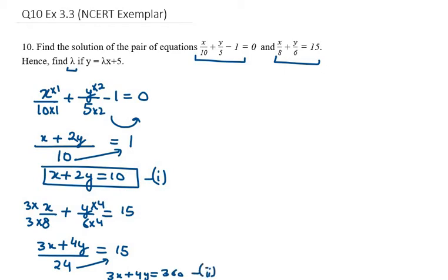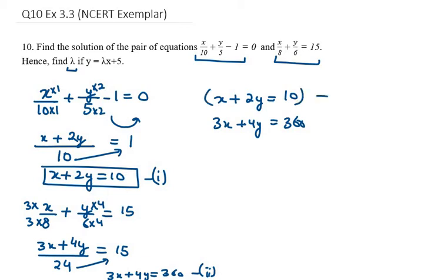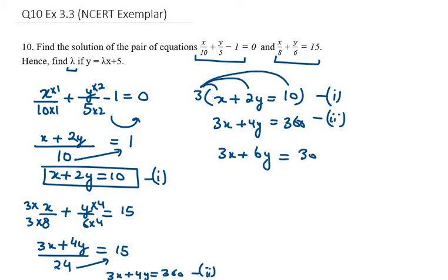We will solve using the elimination method. We have x plus 2y equals 10 and 3x plus 4y equals 360. To make the x coefficient equal, I will multiply equation 1 by 3, giving 3x plus 6y equals 30. The second equation remains as is: 3x plus 4y equals 360.